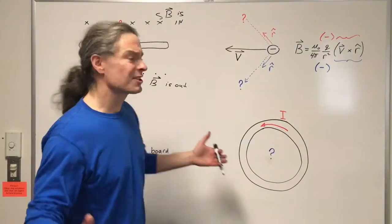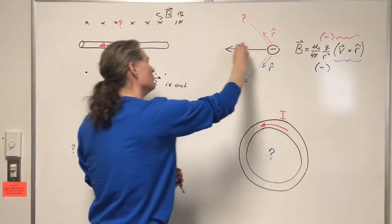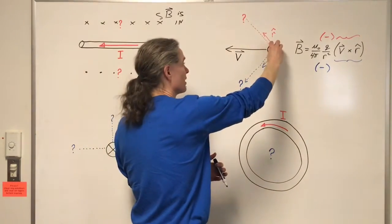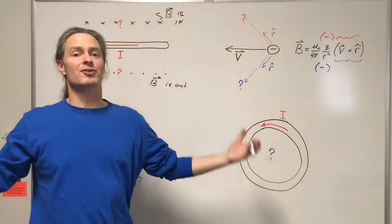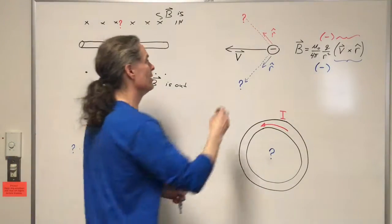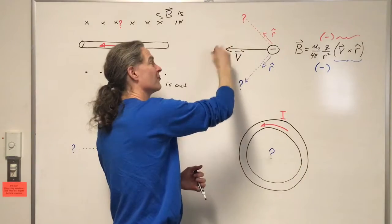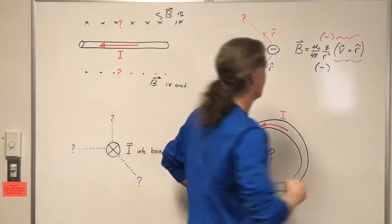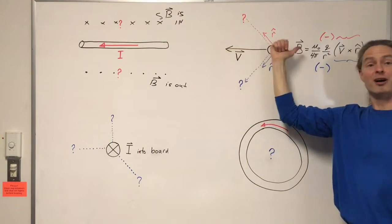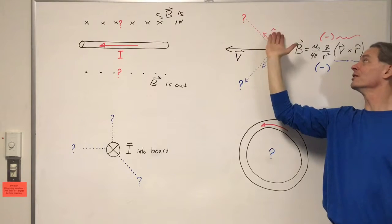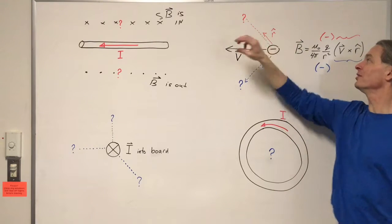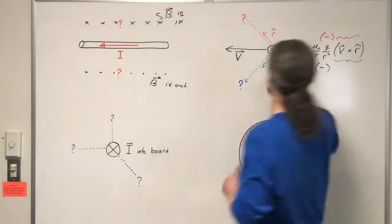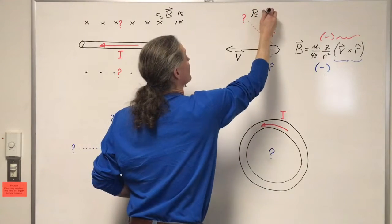Moving to our next example, we consider a negative charge moving to the left. One way we could solve this is to think of it in terms of the equivalent current. Negative charges moving to the left are equivalent to positive charges moving to the right. So if we think of this as a current, we actually have a current to the right. Stick the thumb of our right hand in the direction of the current, fingers wrap around in the direction of the magnetic field. So anywhere up here, the magnetic field should be out. And anywhere down here, the magnetic field should be in. B is out up here.